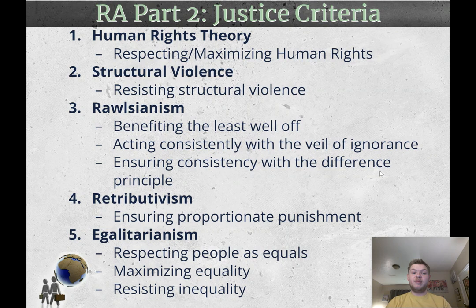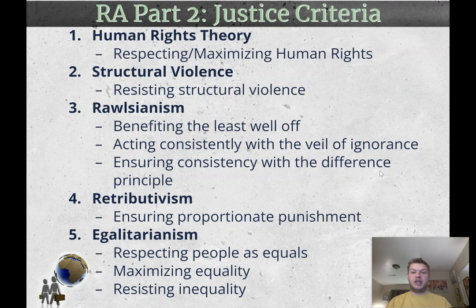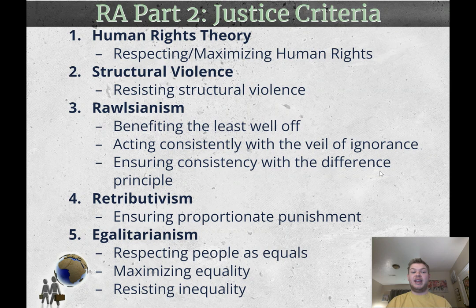Third, Rawlsianism or Rawlsian justice from philosopher John Rawls, which you could phrase as your criterion being benefiting the least well off. You could also phrase it as acting consistently with the veil of ignorance — when making a decision, we should pretend we have no idea who we are or who we would be, whether the richest or poorest person in society. This means we'd make decisions that benefit the least well off in case we ended up being them. Or you could phrase it as ensuring consistency with the difference principle, which says inequality should benefit those least well off.